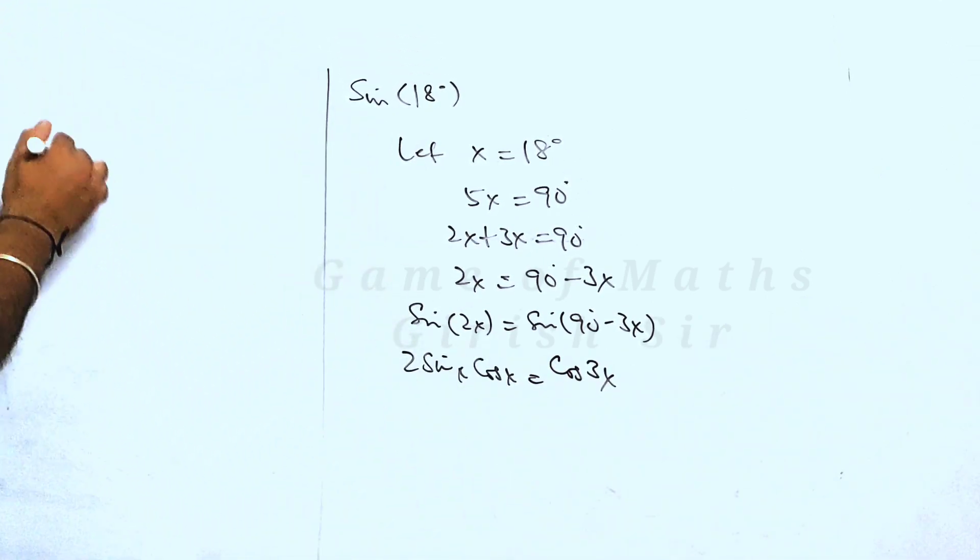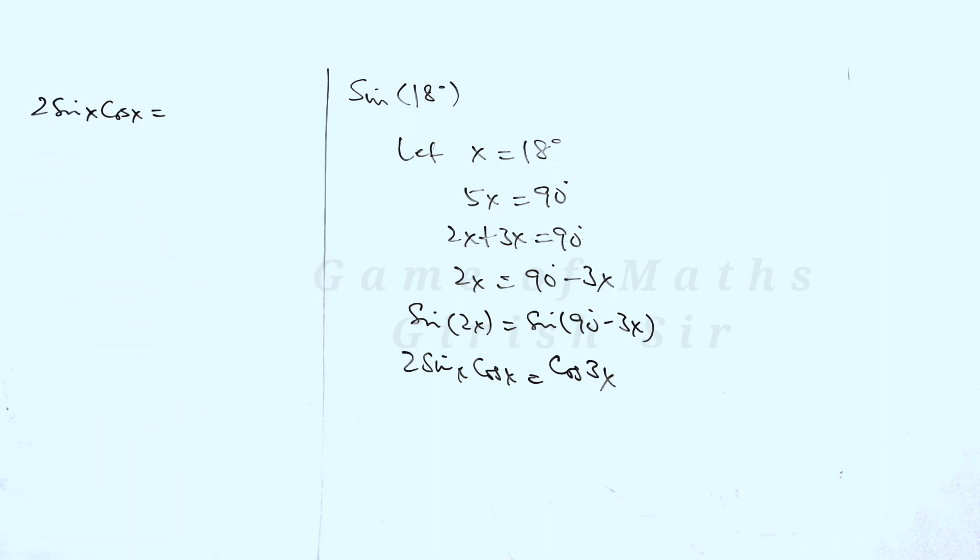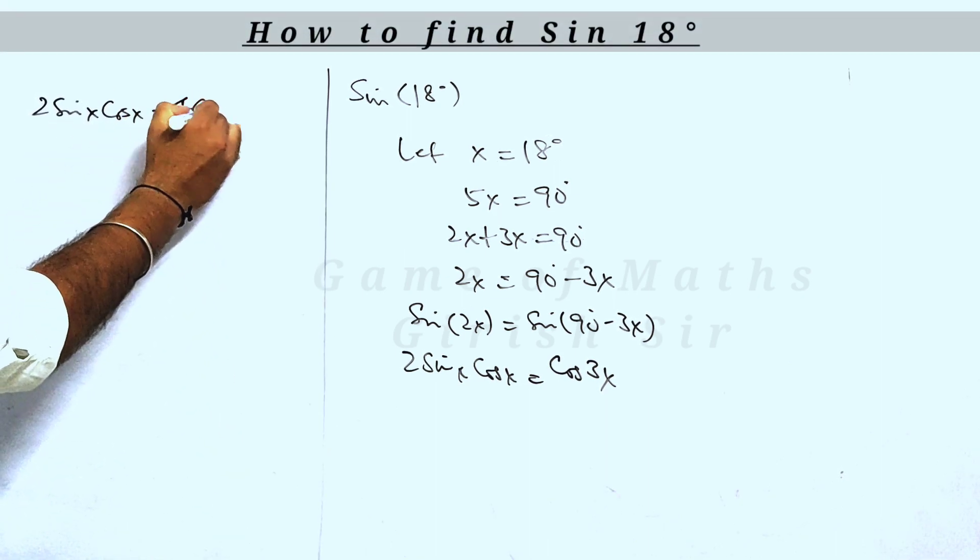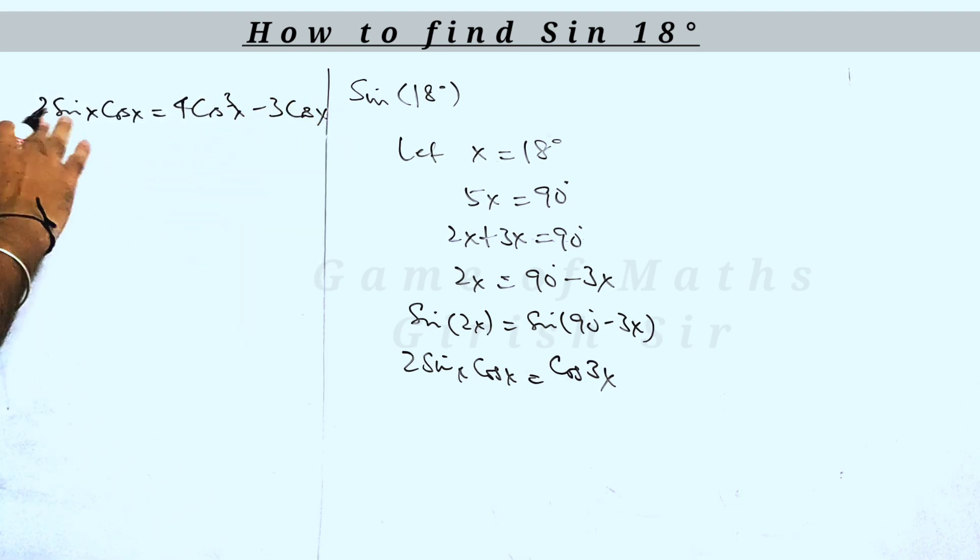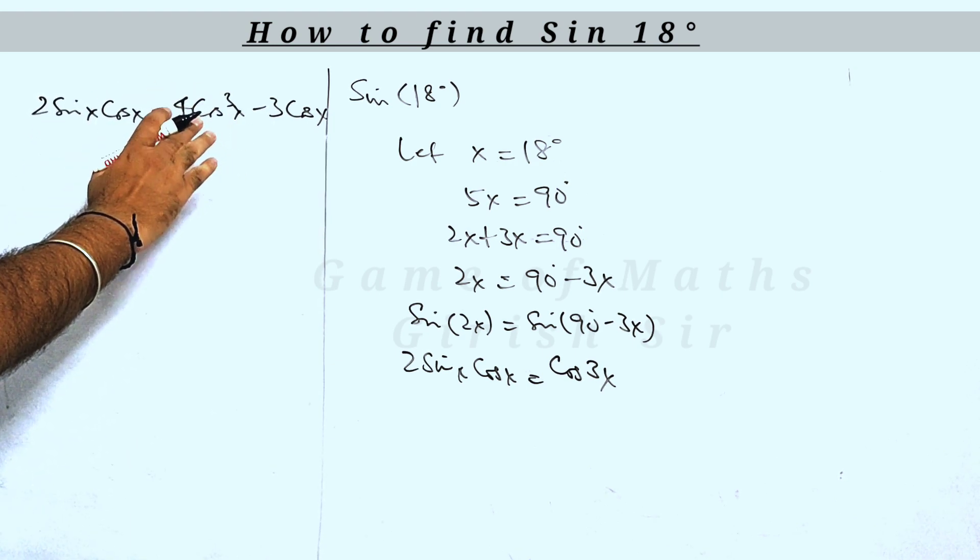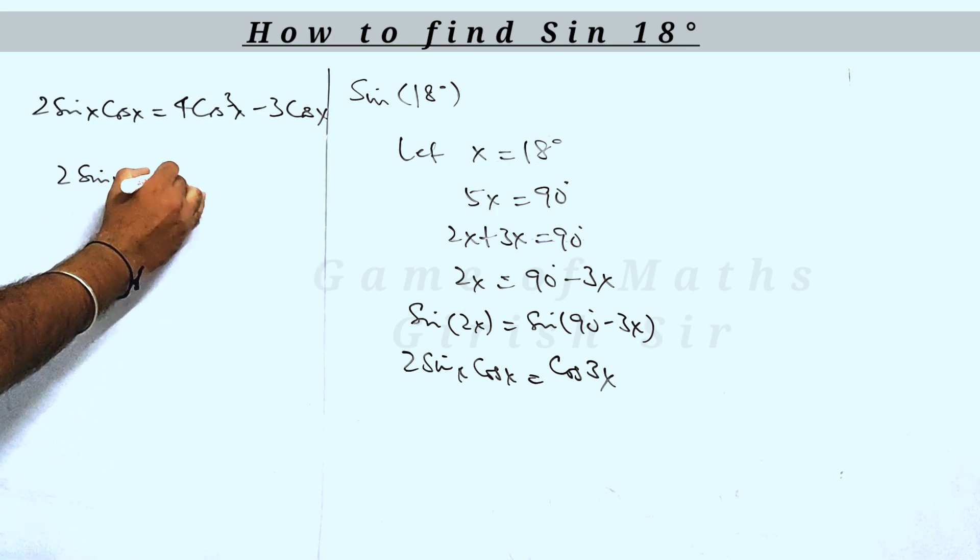Now see the next step. On the right hand side we put the value of cos 3x, which is 4 cos cubed x minus 3 cos x. Now if you see, cos x could be taken out common from both sides and cancelled, which will give you this.